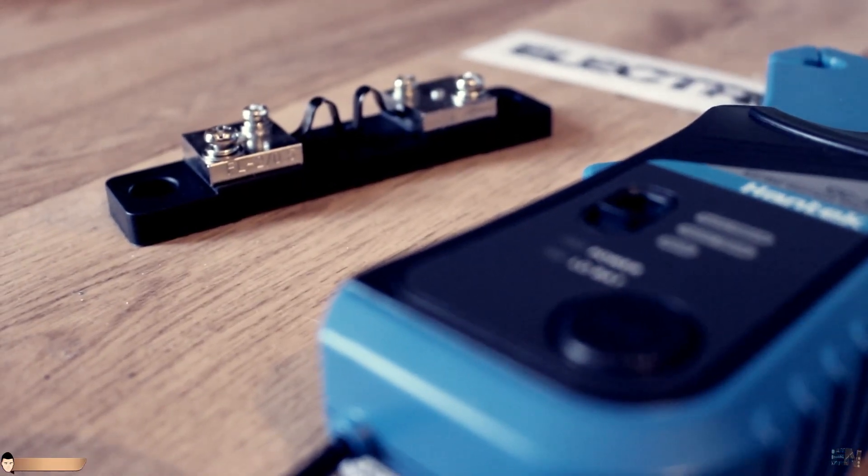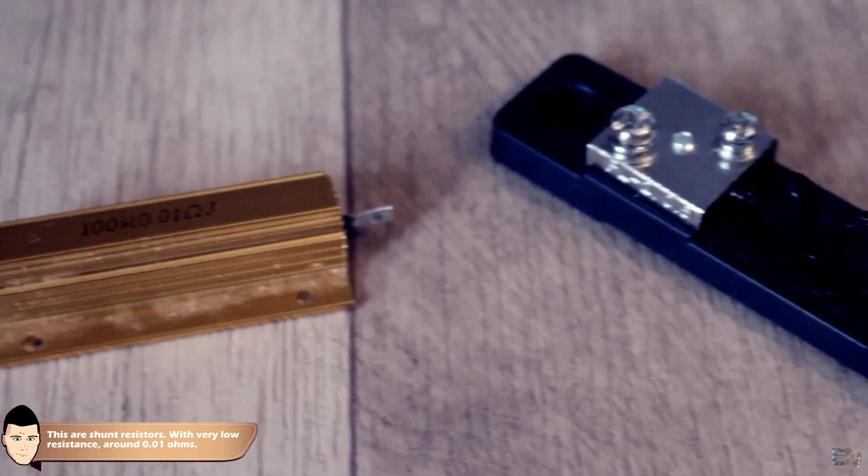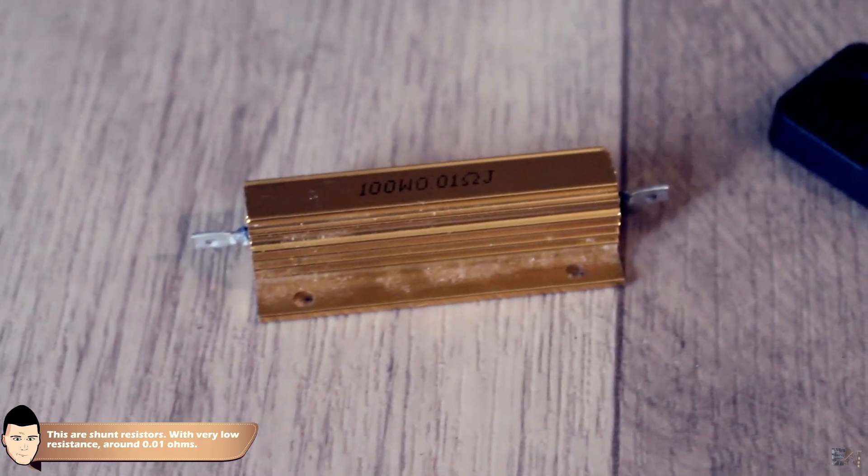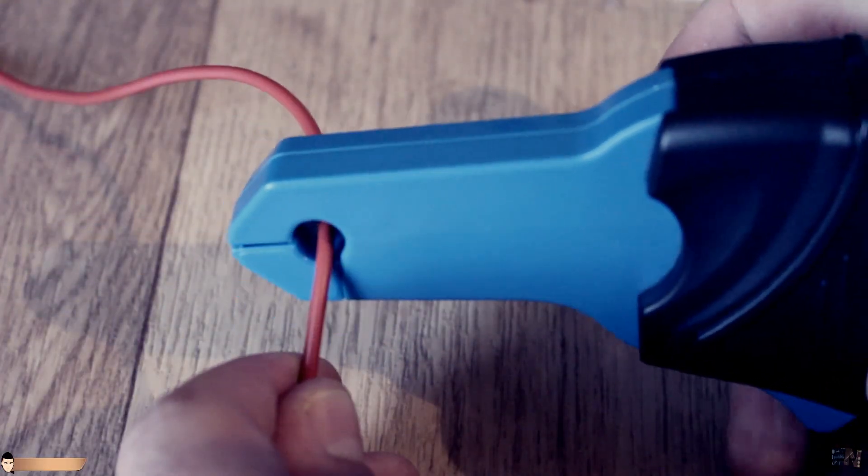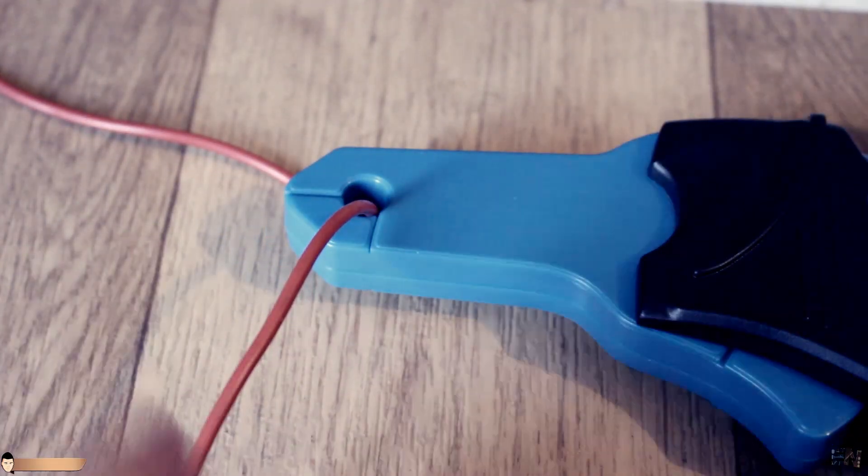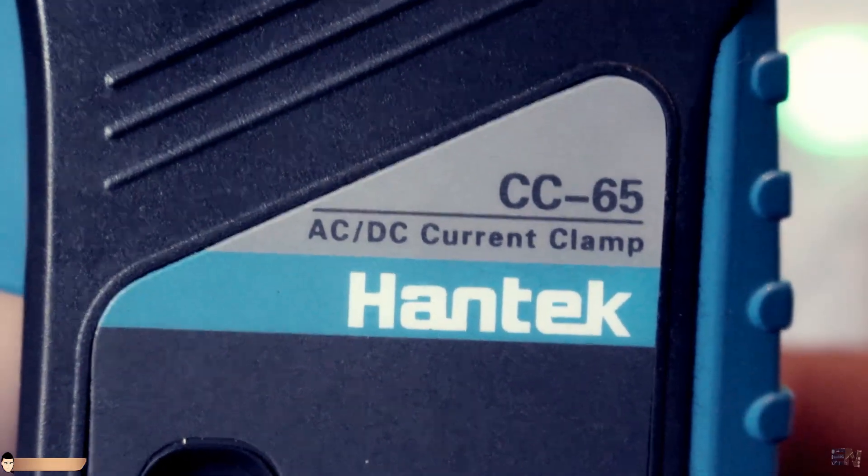In this video we will do something different, because that additional resistance can also affect the measurement by its burden voltage. Currents can also be measured with a current probe, also known as a current clamp. These probes don't have the disadvantages of the shunt resistor, as we have just described.